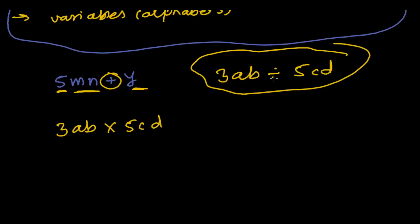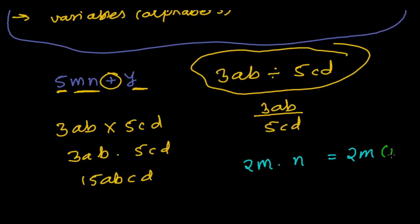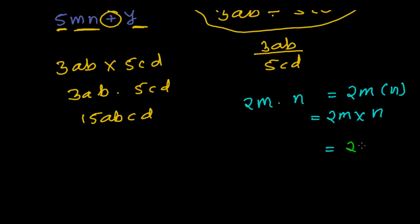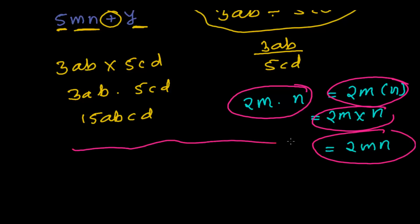Let me tell you some more things. This can be written as 3ab divided by 5cd. And here, 3ab times 5cd. Sometimes even you won't see this - they will directly write by multiplying. So 15abcd. I mean to say, if you see in future 2m times n, or 2m times n, or simply 2mn, these all mean the same thing. There are many different ways to express the same thing in different ways. These are all examples of different algebraic expressions.